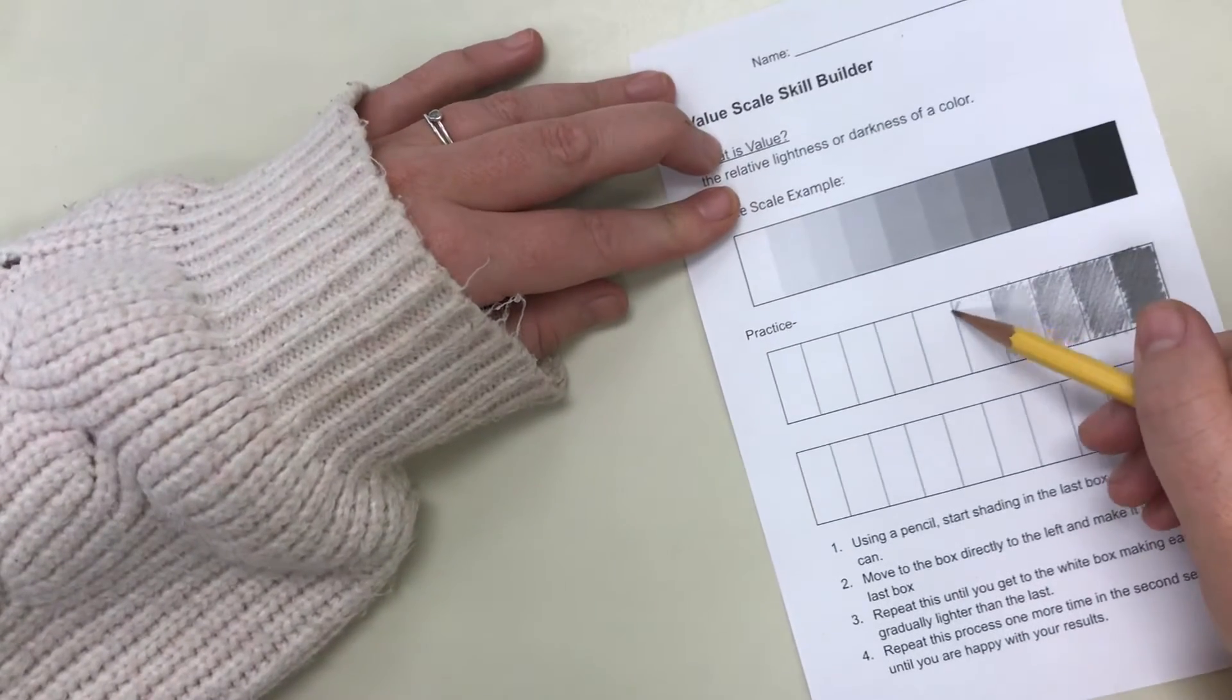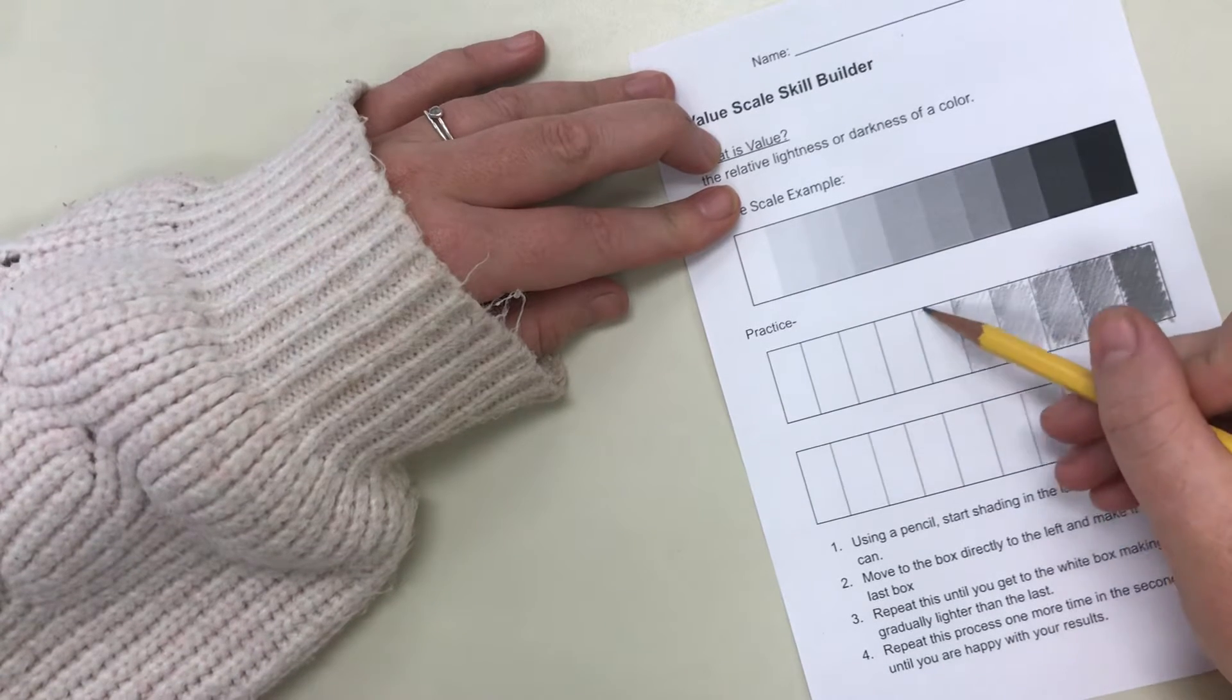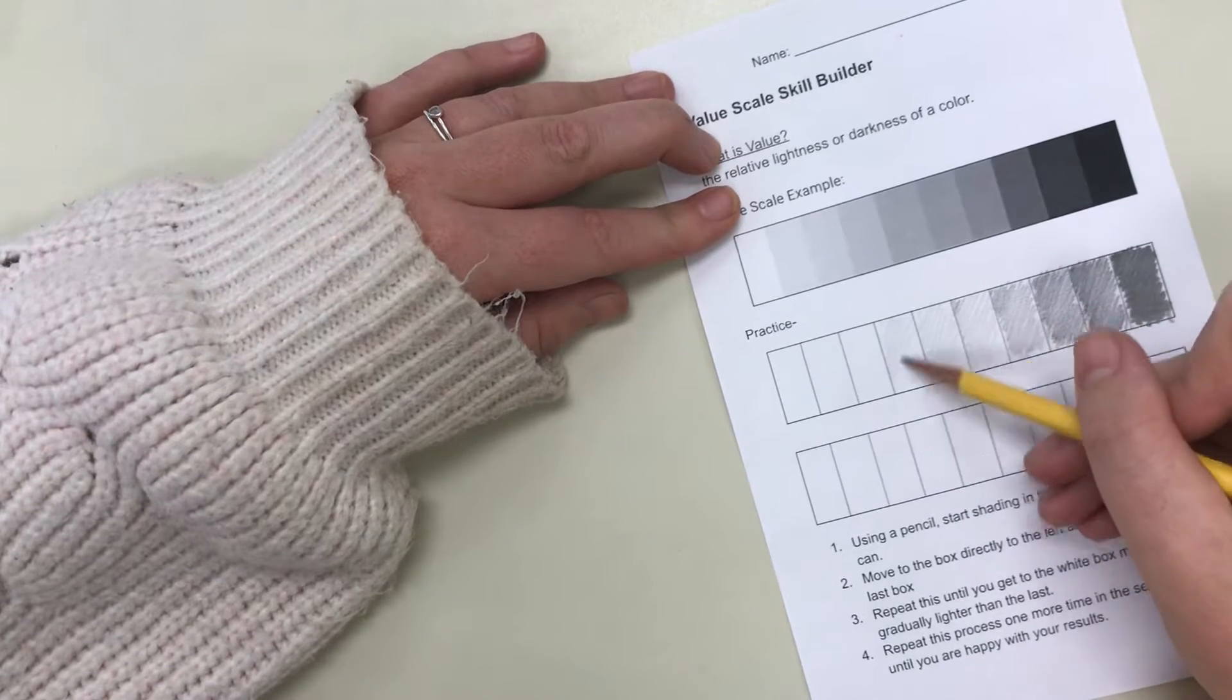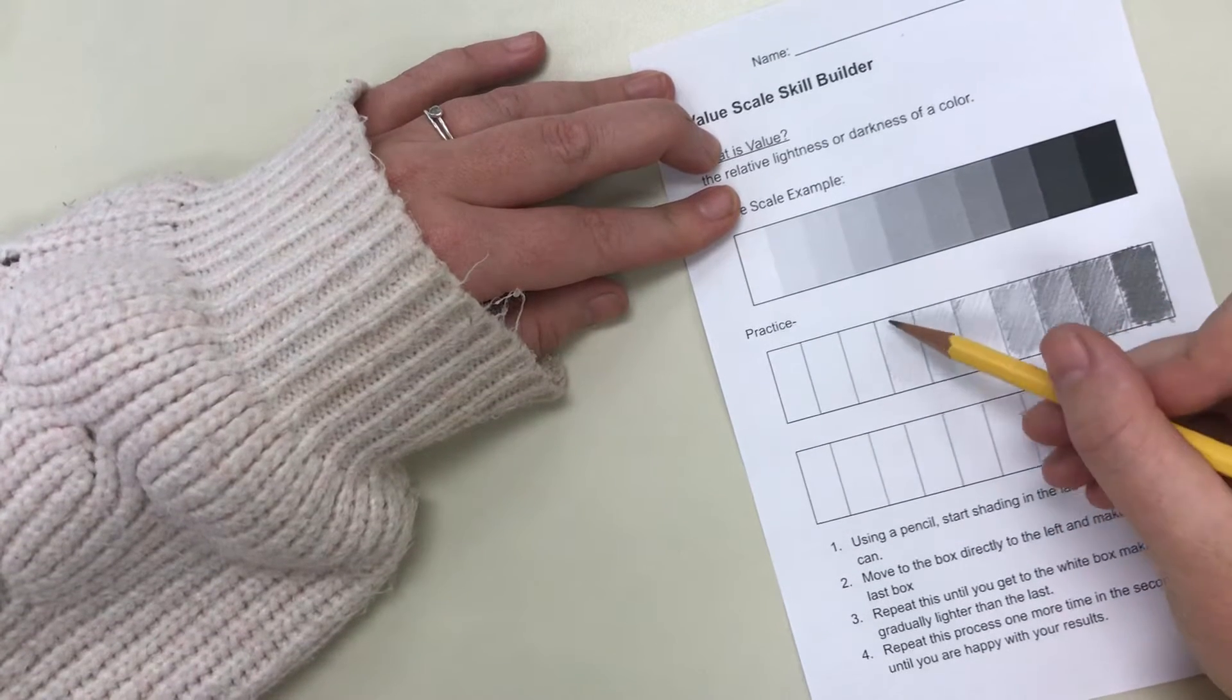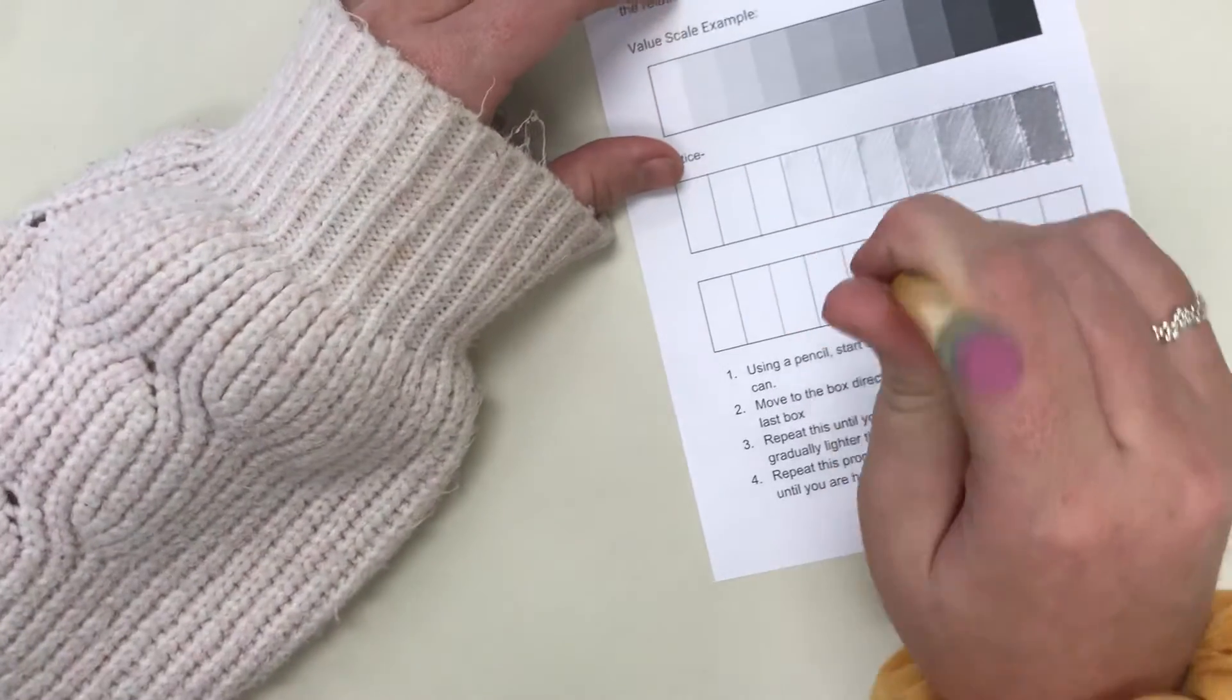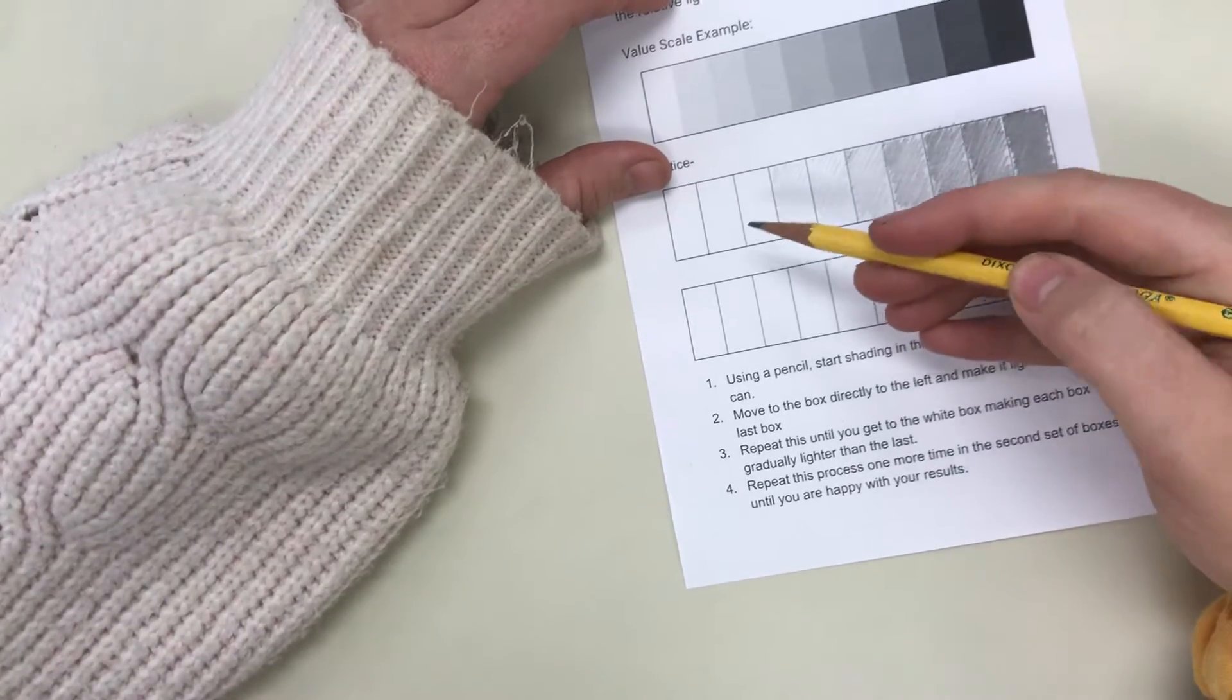Then I'm going to move over one more. Slightly lighter, slightly lighter. And then it gets really hard right here because you have to press super lightly with your pencil so you no longer want to be up and down like this. You want to hold your pencil to the side however feels comfortable.